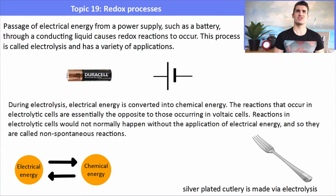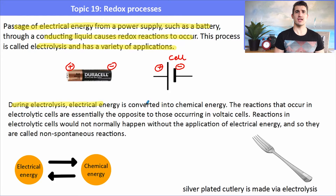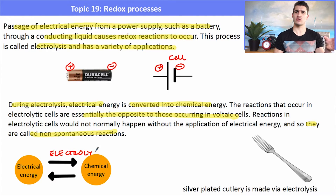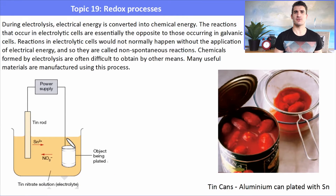Moving on to a different application: electrolysis. If we pass electrical energy from a power supply through a conducting solution, this is electrolysis. Just like a battery, a power pack has positive and negative ends — the short fat line is negative and the long skinny line is positive. During electrolysis, electrical energy is converted directly into chemical energy, and the reactions are generally the opposite of those in a voltaic cell — they are non-spontaneous because we must add electricity to drive them.